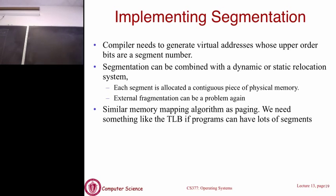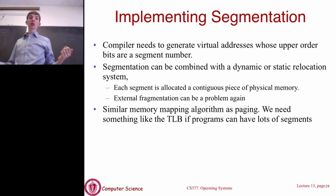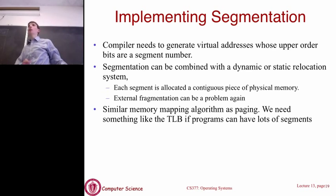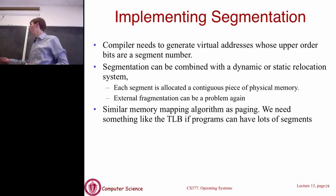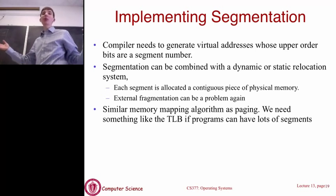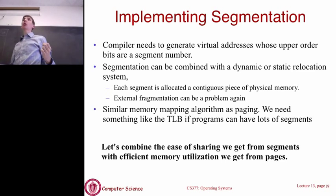In summary for segmentation: the compiler is generating virtual addresses with a segment number and an offset. We give each segment a contiguous piece of physical memory. But we've reintroduced the problem of fragmentation, just as we had with relocation. Segmentation is very nice for the compiler; paging is very nice for the OS because it eliminates external fragmentation. So essentially what we really want to do is combine the benefits of segments with the efficient memory utilization of pages.